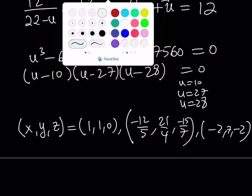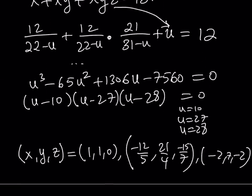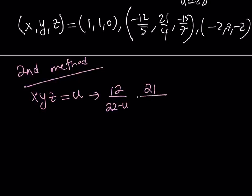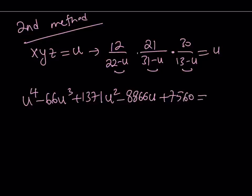Now, let's talk about the second method. The second method is basically using the fact that x, y, z is equal to u. So, the product of all these things is equal to u. So, I can just replace x with 12 over 22 minus u, y with 21 over 31 minus u, and z with 30 over 13 minus u. And, that is equal to u. Obviously, when you multiply through, you're going to be getting a quartic equation, not a quadratic. Why? Because, this is going to make a cubic when you multiply by u, by cross multiplication. You're going to get a quartic equation, which looks like the following. It is going to be u to the fourth power minus 66 u to the third plus 1371 u squared minus 8866 u. The numbers are fairly large. That's why we don't really need to get into the details here. It's just busy work.